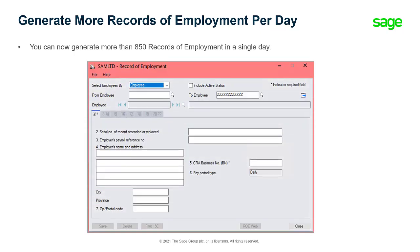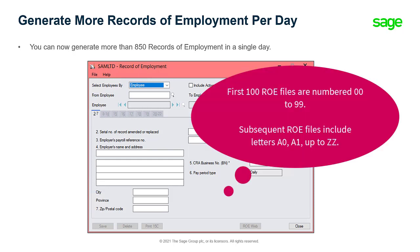You can now generate more than 850 records of employment in a single day. Previously, the limit was 100. Note that the first 100 Record of Employment files are numbered 00 to 99. Subsequent Record of Employment files include letters A0, A1, and so on, up to ZZ.